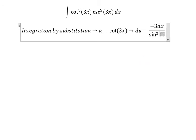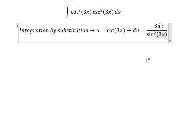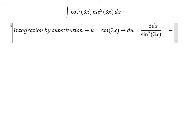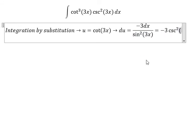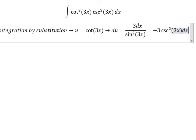Or you can write this as negative 3 cosecant squared 3x dx.